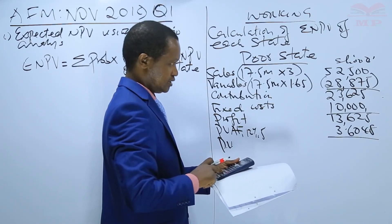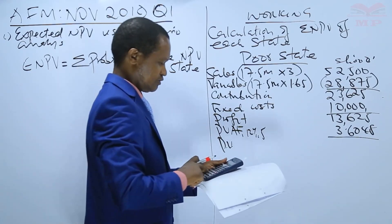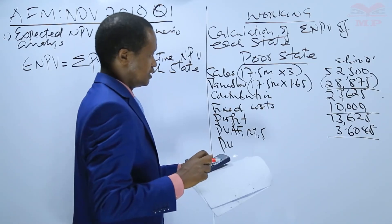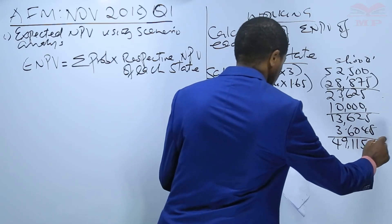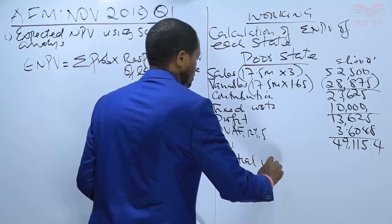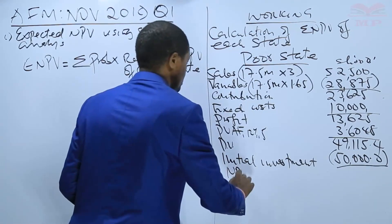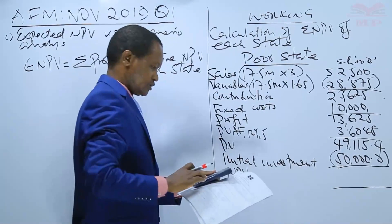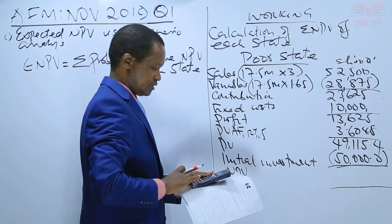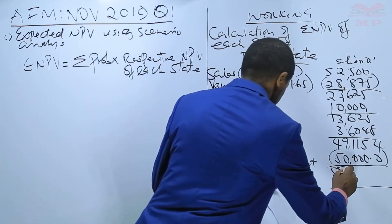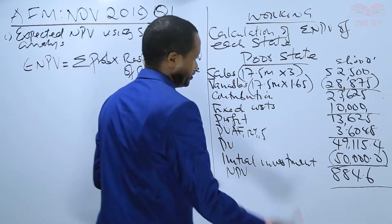13,625,000 times 3.6048 gives a present value of 49,115,400. Deducting the initial investment of 50 million gives us the NPV: 49,115,400 minus 50,000,000 = negative 884,600. That is the NPV for the poor state.